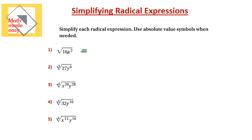The square root of 16x squared: applying everything we know, the square root of 16 is 4, and the square root of x squared is x. Because this is an even index, put x inside an absolute value. The exponent on x is 1, which is odd, so it stays in the absolute value. Final answer: 4 times absolute value of x.